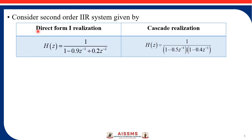Now let us consider the second order IIR system and we are going to consider two types of realizations: first realization is direct form 1 realization and second is cascade realization. For the second order transfer function for the direct form 1 realization, it is H(z) equal to 1 upon 1 minus 0.9 z raised to minus 1 plus 0.2 z raised to minus 2.